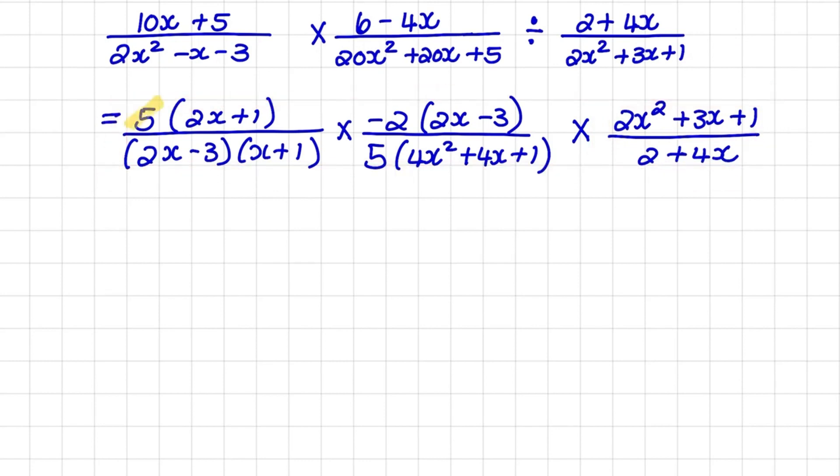I notice that there is a 5 in my first fraction that will cancel out with the 5 in my second fraction. I also notice there is a set of brackets, which is 2x minus 3, which will cancel one another out. So that will lead to a simplified first fraction of 2x plus 1 over x plus 1.